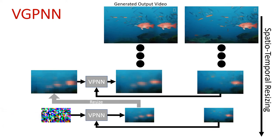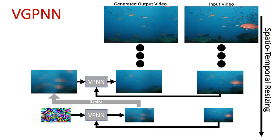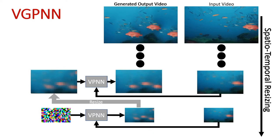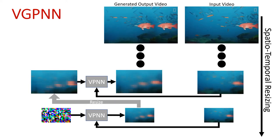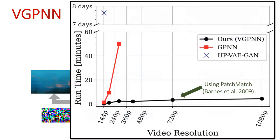Different noise inputs will generate different outputs. The most time-consuming component in patch-based methods is searching nearest neighbors between patches. By using PatchMatch by Barnes et al., we reduce time complexity from square to linear time, thus making it possible to generate new video samples orders of magnitude faster than previous GAN-based methods.